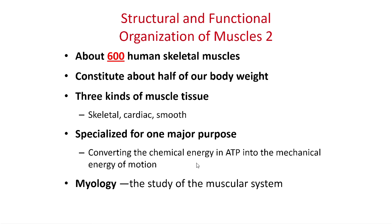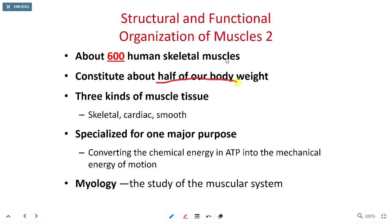In our body, we have approximately 600 muscles, depending on how you slice and dice — pun intended — the skeletal muscles in a cadaver. We are not going to cover all 600 muscles in this class, thankfully. Muscles are a big part of our body; we are about one half skeletal muscle, assuming a healthy BMI.